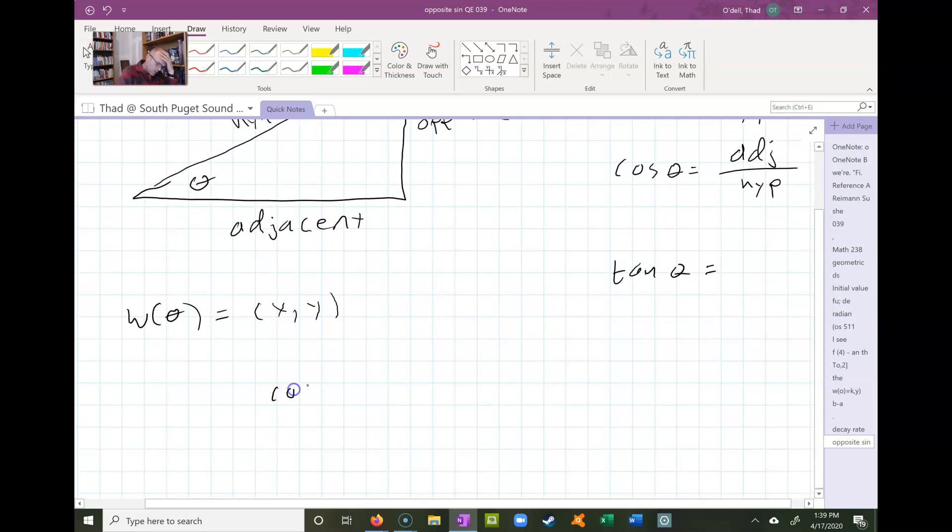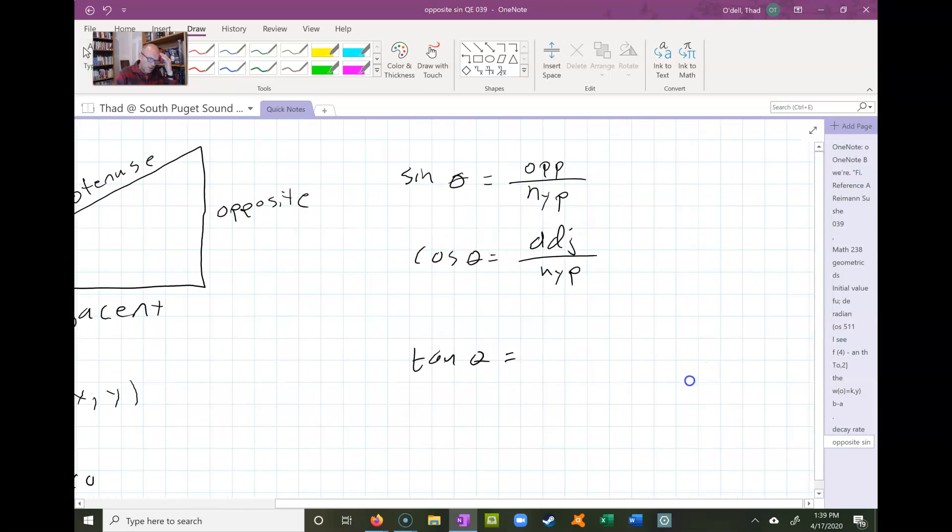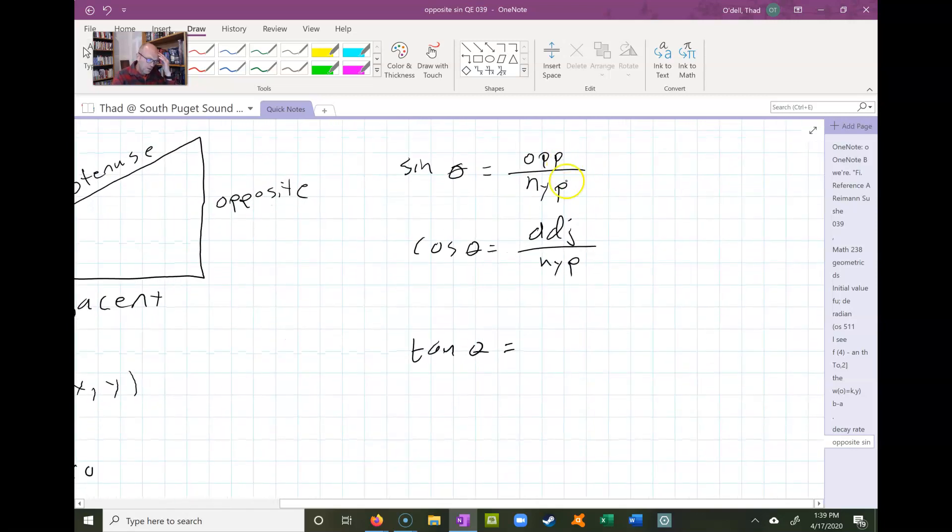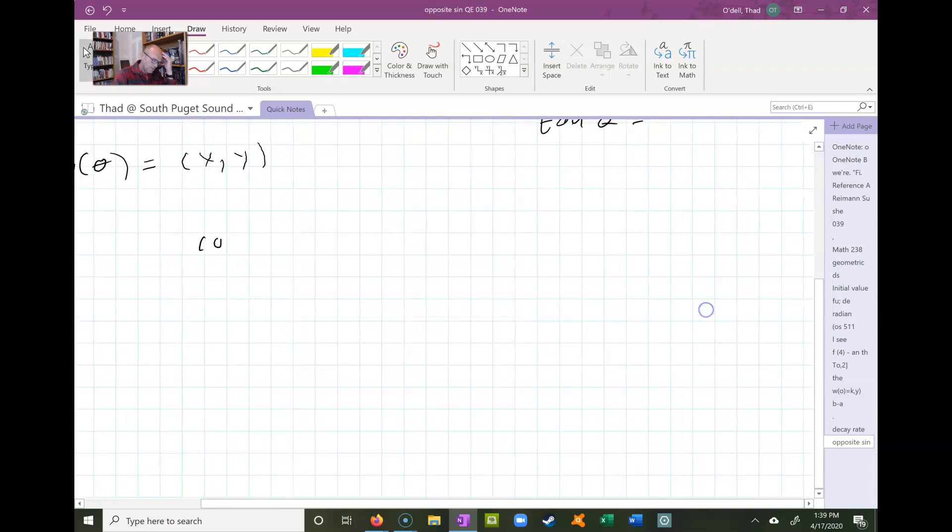We learned last video that sine is the opposite over hypotenuse in the right triangle and cosine is the adjacent leg over the hypotenuse in a right triangle. So if I'm looking at a unit circle and looking at, say, this angle here...